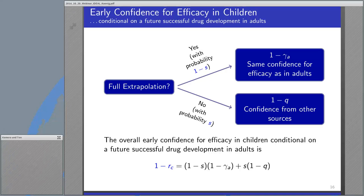A higher value of S means that we are more skeptical, meaning we believe more strongly that extrapolation is not possible. What is our early confidence that the drug works in children, conditional on a successful adult development program? If full extrapolation is possible with probability 1 minus S, then we have the same confidence for efficacy as in adults, so 1 minus gamma_A. If no extrapolation is possible, then the confidence is 1 minus q, whereby this confidence has to come from other sources, for example a case series where we have some PK data in children. The overall early confidence for efficacy in children is simply a weighted mixture of these two probabilities.